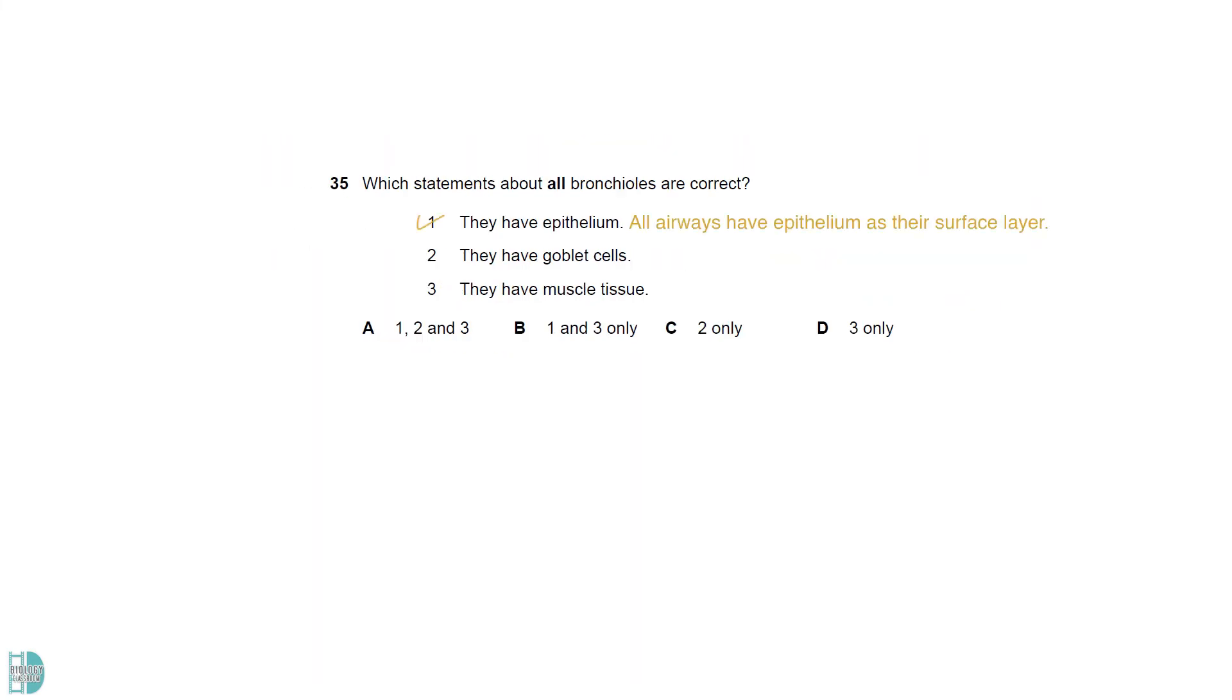All airways have epithelium as their surface layer. Bronchioles have muscle tissue too for dilation and constriction. Bronchioles do not have goblet cells.